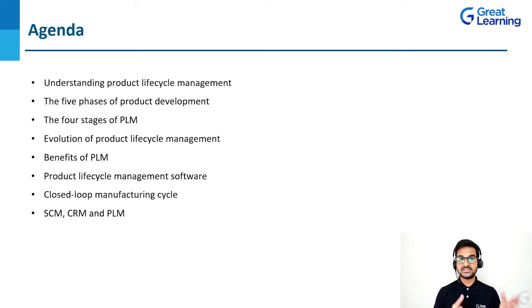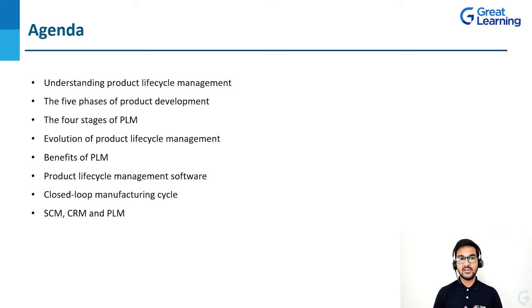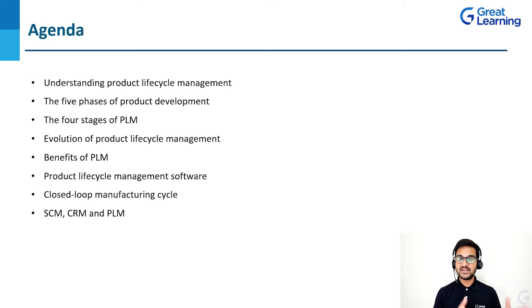First, we are going to discuss understanding product life cycle management — what exactly is PLM and how it is different from PDM, that is product data management. Then the five phases of product development, starting from its introduction to its retirement. Then the four stages of product life cycle management, then the evolution of PLM over time, then the benefits of PLM, then PLM software and its must-haves, then closed-loop manufacturing cycle, and finally SCM, CRM, and PLM — that is supply chain management, customer relationship management, and product life cycle management — and how these three terms are interrelated.